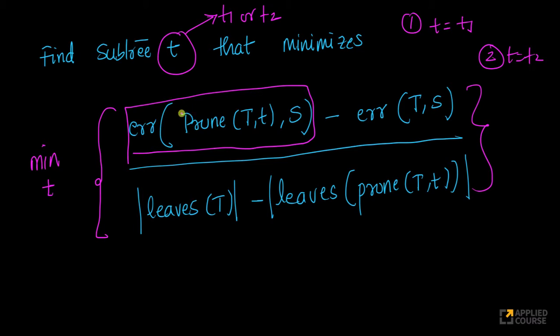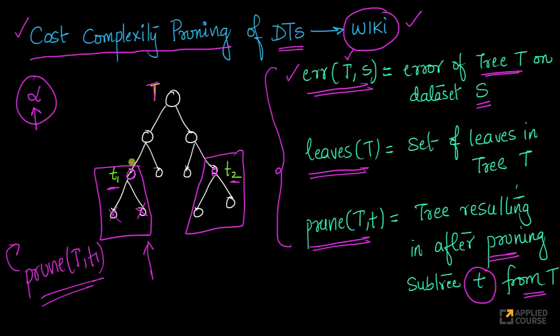Now, if you think logically, what is this? This is prune(T,t). Let's assume t equals to t1. Then what do you get? You get this subtree after pruning this node and after removing these two nodes, whatever tree you're left with, that's what you will get.